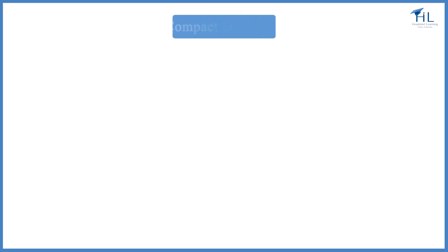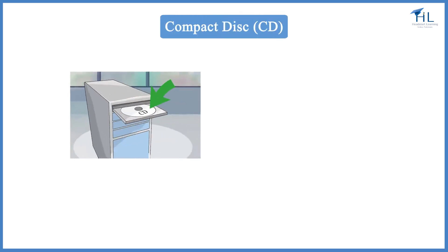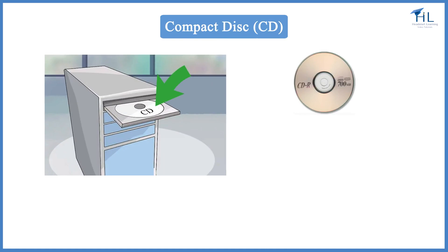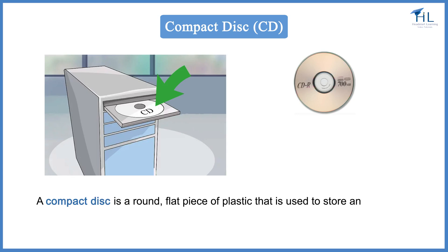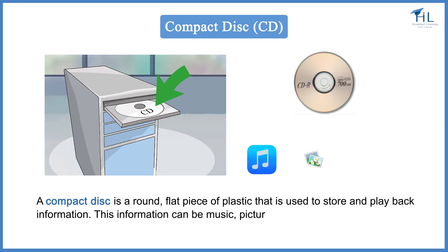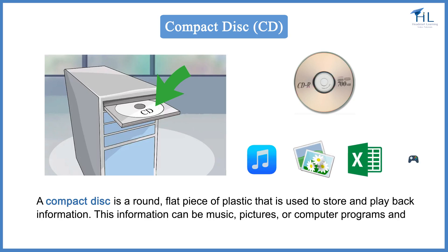Another type of secondary storage device is compact disk, or CD. A compact disk is a round, flat piece of plastic that is used to store and playback information. This information can be music, pictures, or computer programs and games.